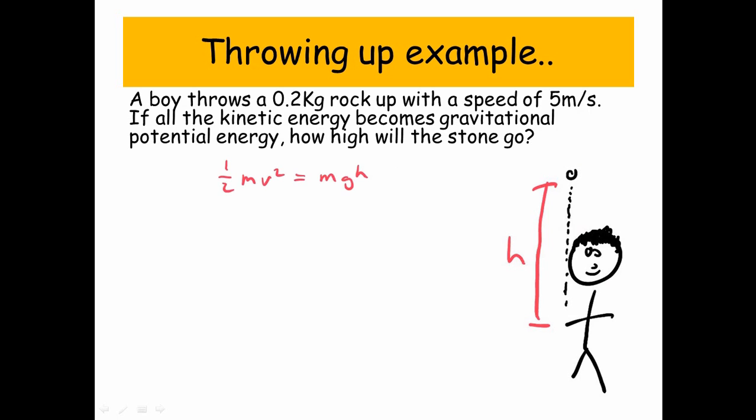So we're going to say that all the kinetic energy to begin with, so to work out kinetic energy, we use the formula half mv squared. And that's going to equal MGH, the gravitational potential energy.